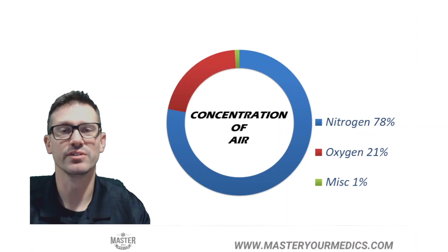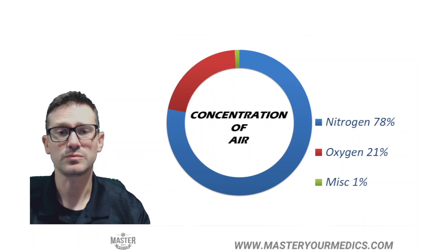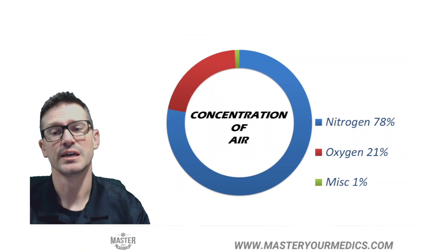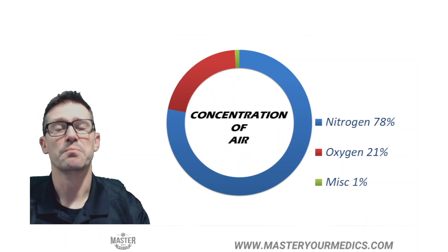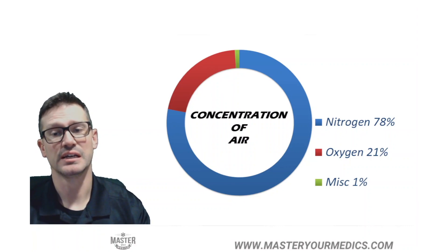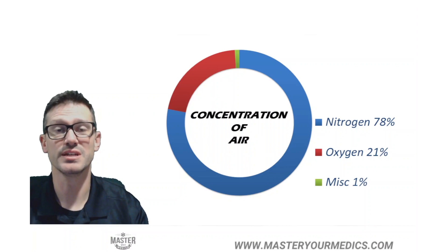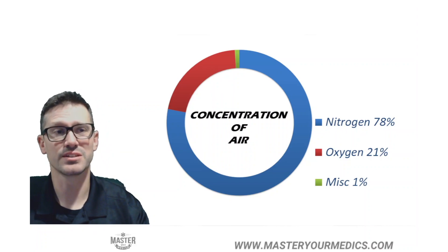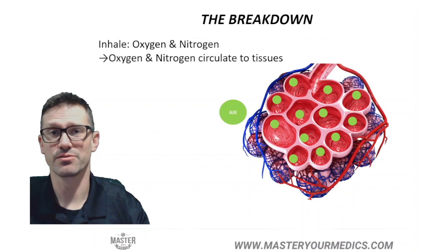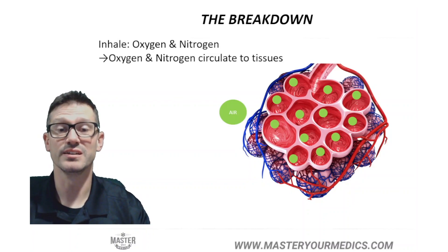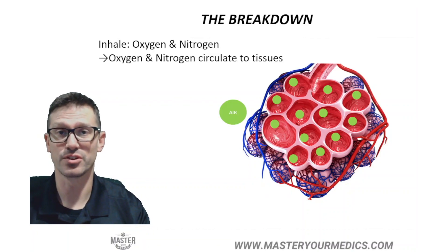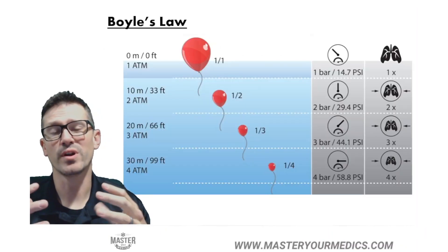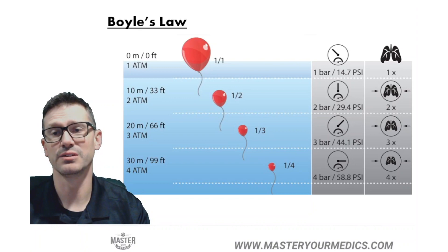As a recap before we dive into this, some basic review. The concentration of air that we breathe is a mix of multiple gases. Mostly it's nitrogen — second is oxygen. The atmospheric air we generally breathe is 21% oxygen, 78% nitrogen, and miscellaneous gases of 1%. As we breathe in oxygen and nitrogen, those gases circulate into our tissues throughout our body. One of the most fundamental things to understand when it comes to dive injuries is the concept of Boyle's Law.